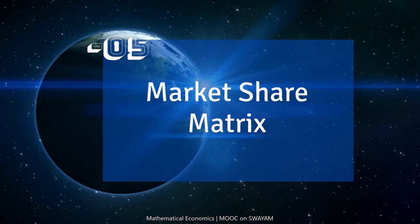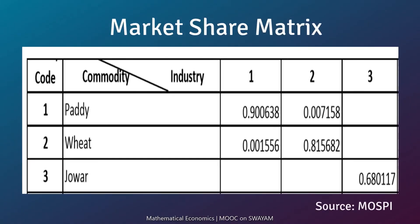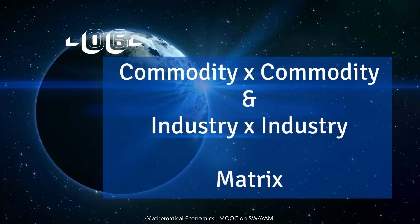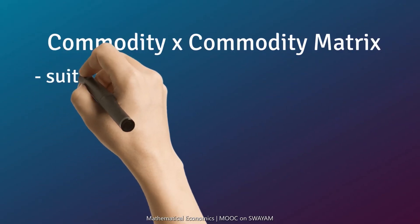In the market share matrix, column entries present the proportions in which the various industries produce the total output of a particular commodity. The diagonal elements give the proportions of the output of various commodities produced as main products. The market share of paddy as a main product is very significant at 90%, and as a subsidiary product in the wheat industry is insignificant with only 0.7%.